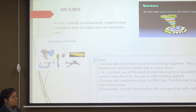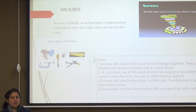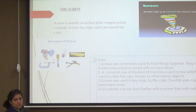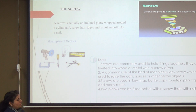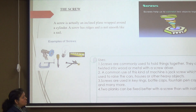Next is the screw. Without screws we wouldn't be able to join two things like wooden pieces or many other parts. Faucets have screws, and bulbs we use have screws too. Screws are commonly used to hold things together. The jack screw is used by mechanics — when a car's tire needs changing, it is used to lift the car. Screws are also used in key rings, bottle caps, fountain pen caps, and many more items.